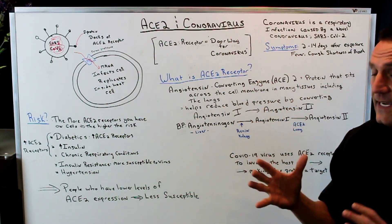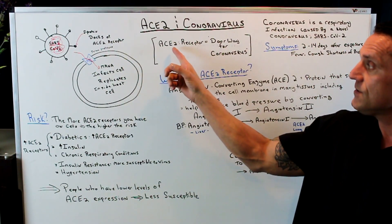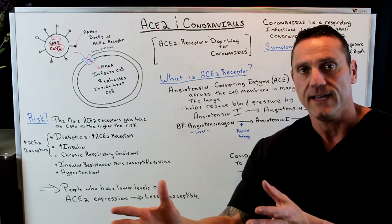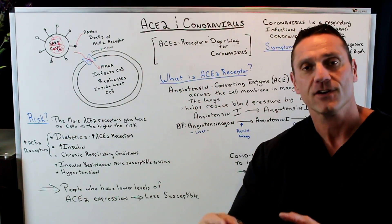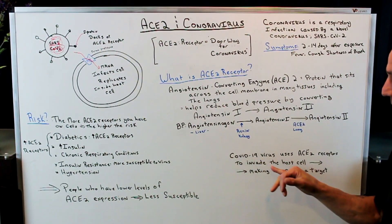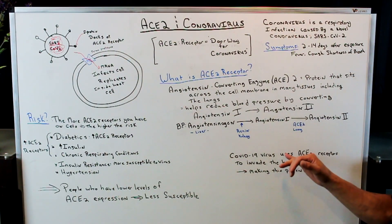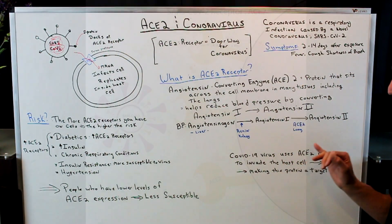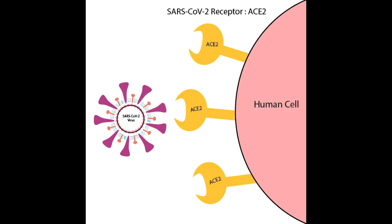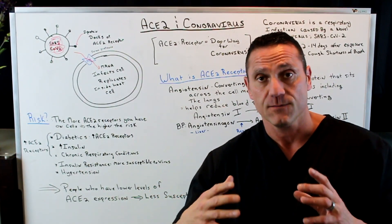The ACE2 receptor is a doorway for the coronavirus. Why is that so important? Because COVID-19 uses the ACE2 receptor to invade the host cell, making this protein a target. This is why COVID-19 attacks the lungs, and when it attacks the lungs, it causes a cascade.